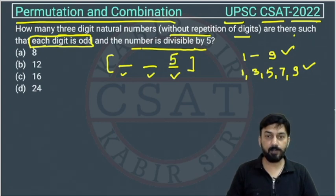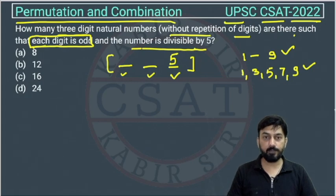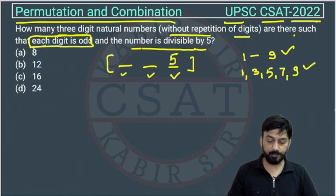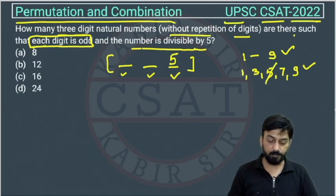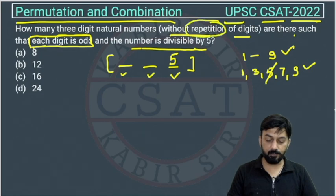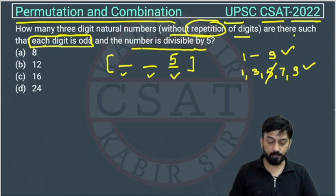Here we consider only 5 because we're working with natural numbers. So the last digit will be 5. Five is already used, we cannot use 5 again because no repetition is allowed. How many digits are remaining? Four: 1, 3, 7, or 9.